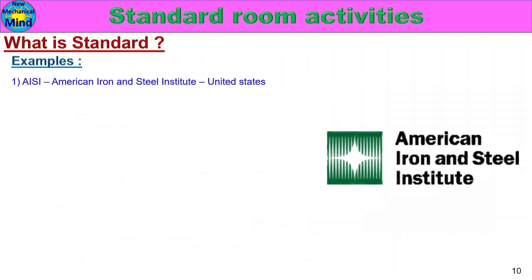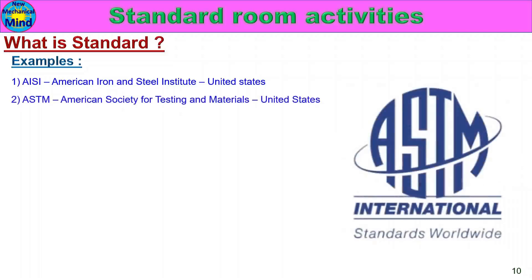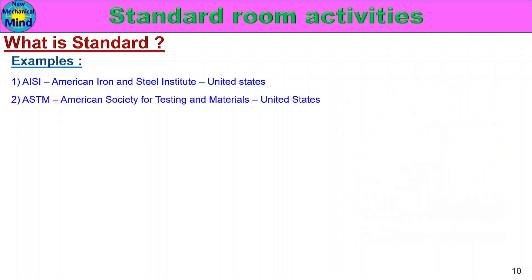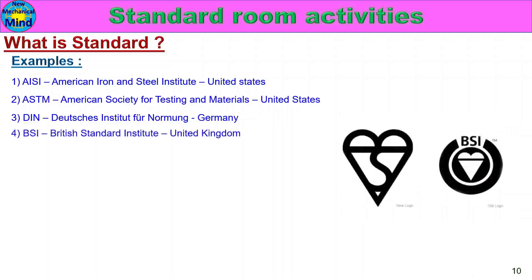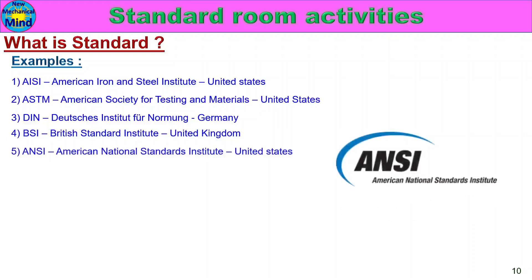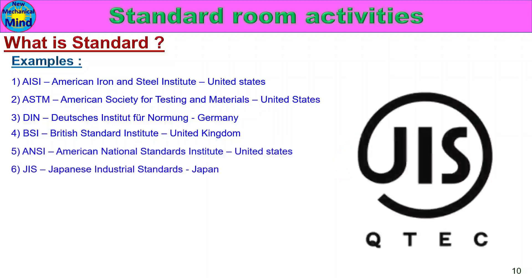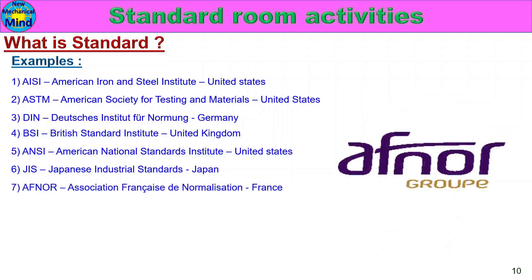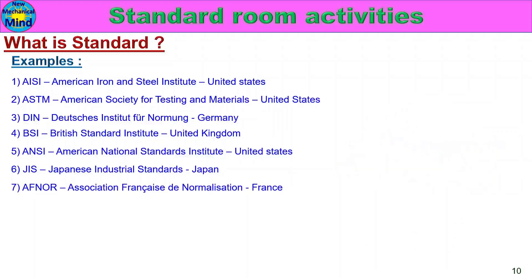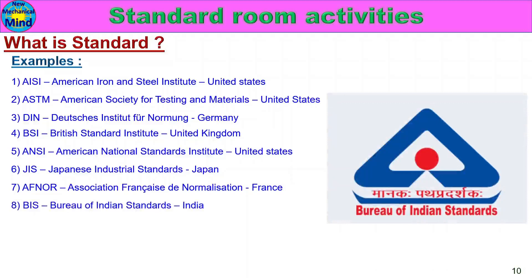Examples of Standards. AISI — American Iron and Steel Institute, United States. ASTM — American Society for Testing and Materials, United States. DIN — Deutsches Institut für Normung, Germany. BSI — British Standards Institution, United Kingdom. ANSI — American National Standards Institute, United States. JIS — Japanese Industrial Standards, Japan. AFNOR — Association Française de Normalisation, France. BIS — Bureau of Indian Standards, India.